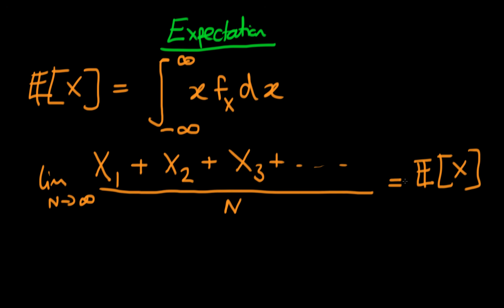So it's the value which we would expect to get if we repeated the process a number of times and then averaged over all of those repeats. So that's the expectation of a random variable.